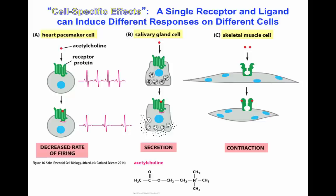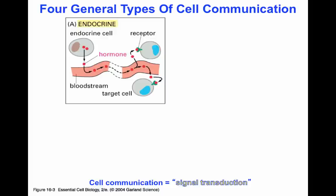Now let's think about ways in which cells can communicate. The first way is from a long distance — sending molecules at a long distance is considered the endocrine pathway. In this image, a cell releases a hormone that travels through the bloodstream and eventually reaches its target cells. In an endocrine system, the hormone always has to travel through a circulatory pathway to reach a target cell that is tissues away.